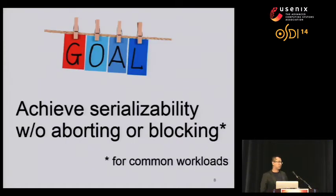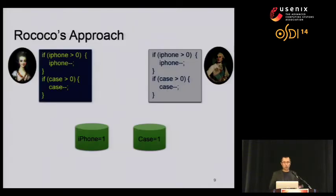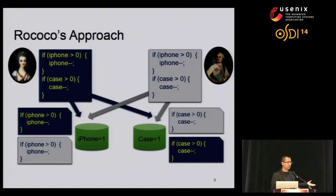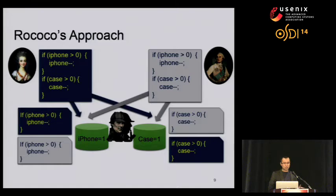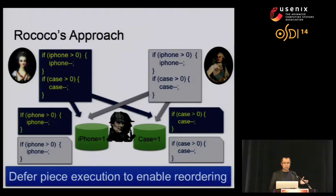So the goal of our work is: for common workloads, instead of optimistic execution followed by aborts, or serialization by blocking, is there any way that we can still achieve serializability without all the costs of aborting or blocking? And here comes our answer with Rococo. For the same example, when two transactions are non-serializably interleaved on two servers in the first phase, Rococo will first detect these conflicts by tracking their arriving orders, but not executing them. Then instead of aborting or blocking, Rococo will reorder this conflict into a serializable order for execution. The key insight is that we can defer the piece execution from the time the conflicts are formed and then reorder the execution later.